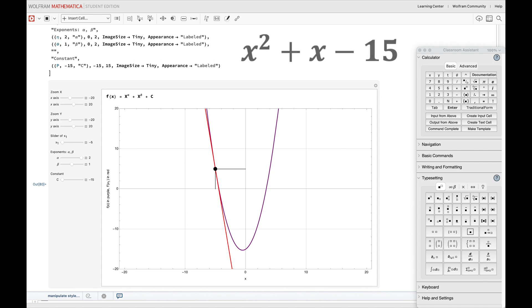Let's look at this example function x squared plus x minus 15 in Wolfram Mathematica. You can see this function in purple and its derivative at any value of x in red. Hence, it's the rate of change, the slope of the tangent line to the function at that point.